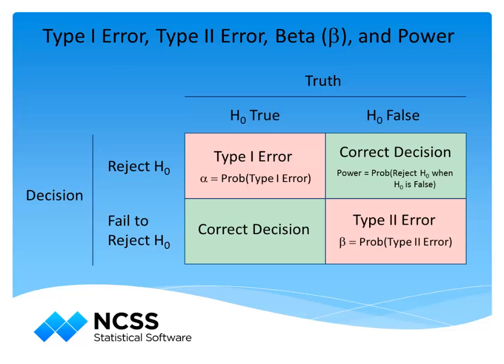Instead of specifying beta for a planned study, it is common practice to specify the probability of rejecting the null hypothesis when it is false, which is 1 minus beta. This value is known as the power. Researchers have long seen the importance of specifying alpha, and more recently have begun to see the importance of considering power as well. It is slowly becoming understood that failure to show a difference is not sufficient evidence to state equality, and low-powered studies often fail to show important differences when those differences really do exist. Study guidelines now commonly require a specific power to be achieved.